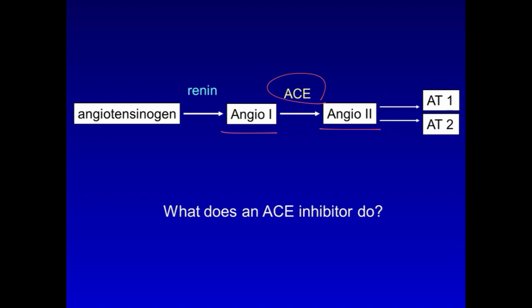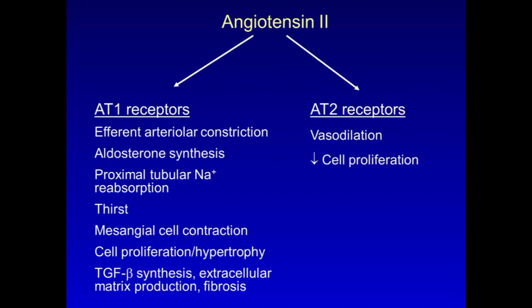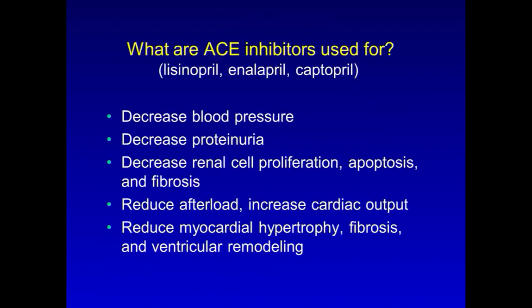Angiotensin-2 then acts on two types of receptors to produce a variety of actions covered in a previous video. The major uses of ACE inhibitors, which have names like lisinopril, enalapril, and captopril, are to treat hypertension, to decrease proteinuria, to decrease renal cell proliferation, apoptosis, and fibrosis, to treat heart failure, and to reduce myocardial hypertrophy, fibrosis, and ventricular remodeling.